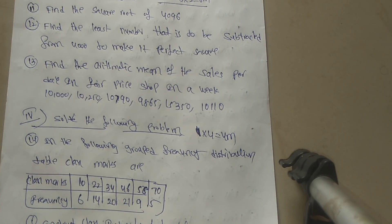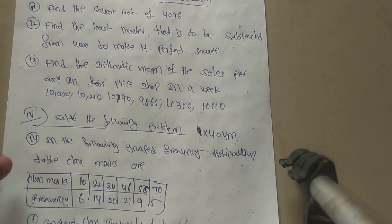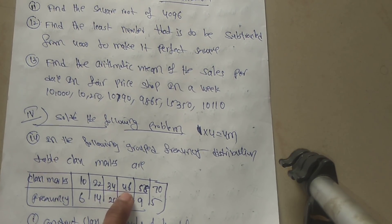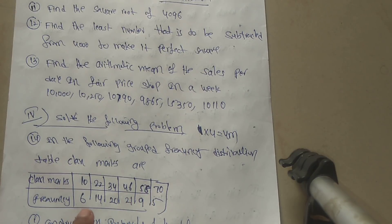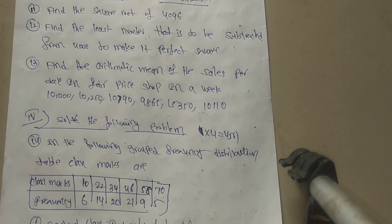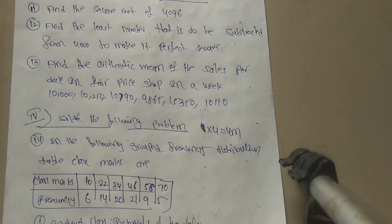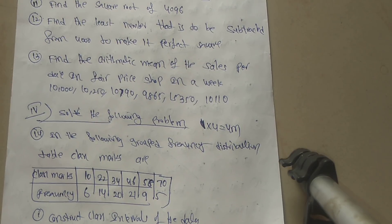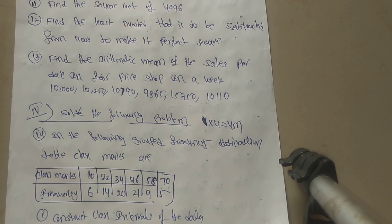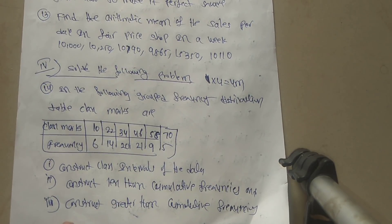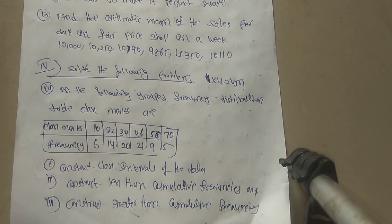Fourth bit: solve the following problem — 1 question, 4 marks. In the following grouped frequency distribution, class marks are 10, 22, 34, 46, 58, 70 with frequencies 6, 14, 20, 21, 9, 5. Construct the class intervals, construct the less-than cumulative frequency, and construct the greater-than cumulative frequency.